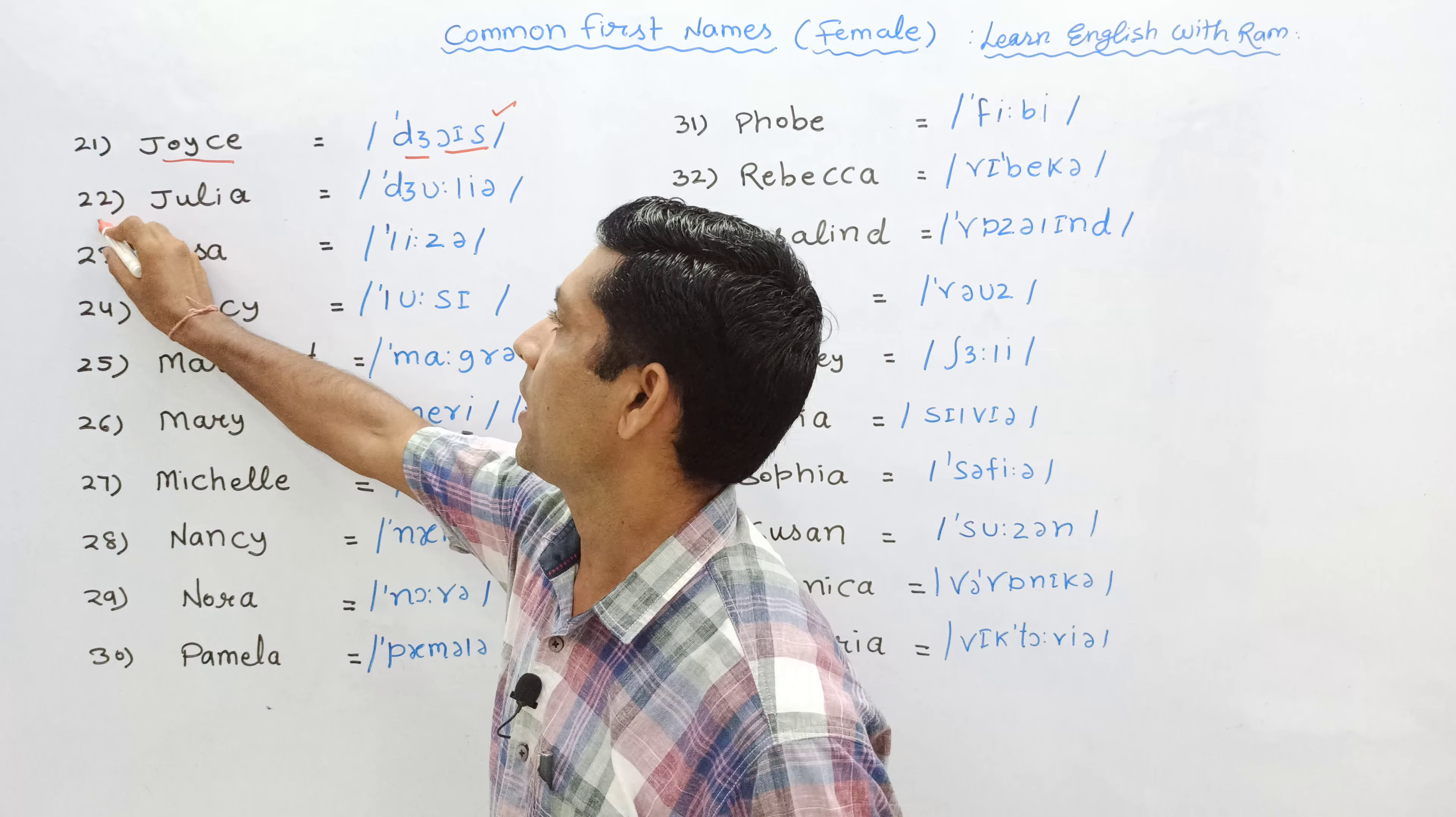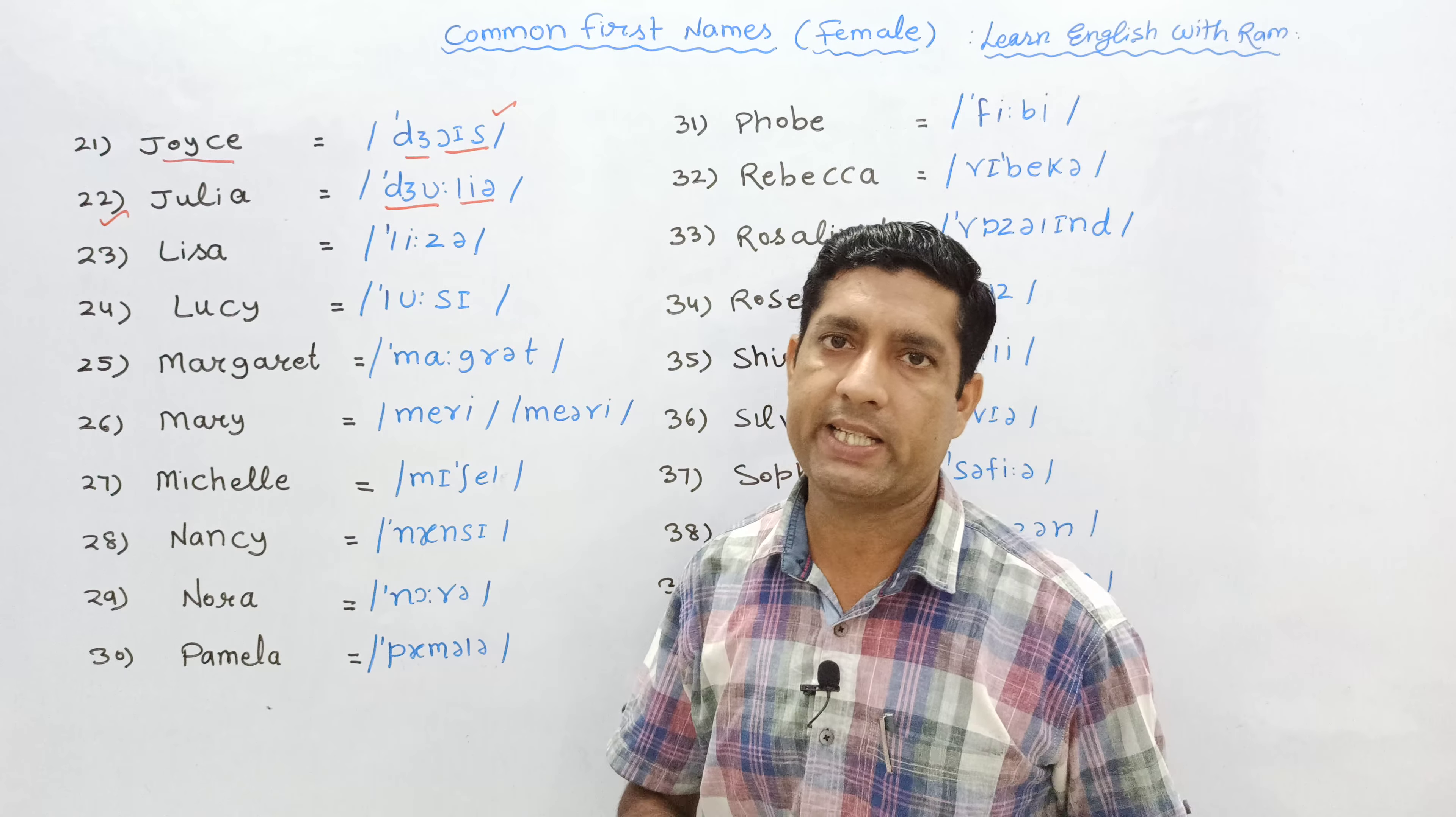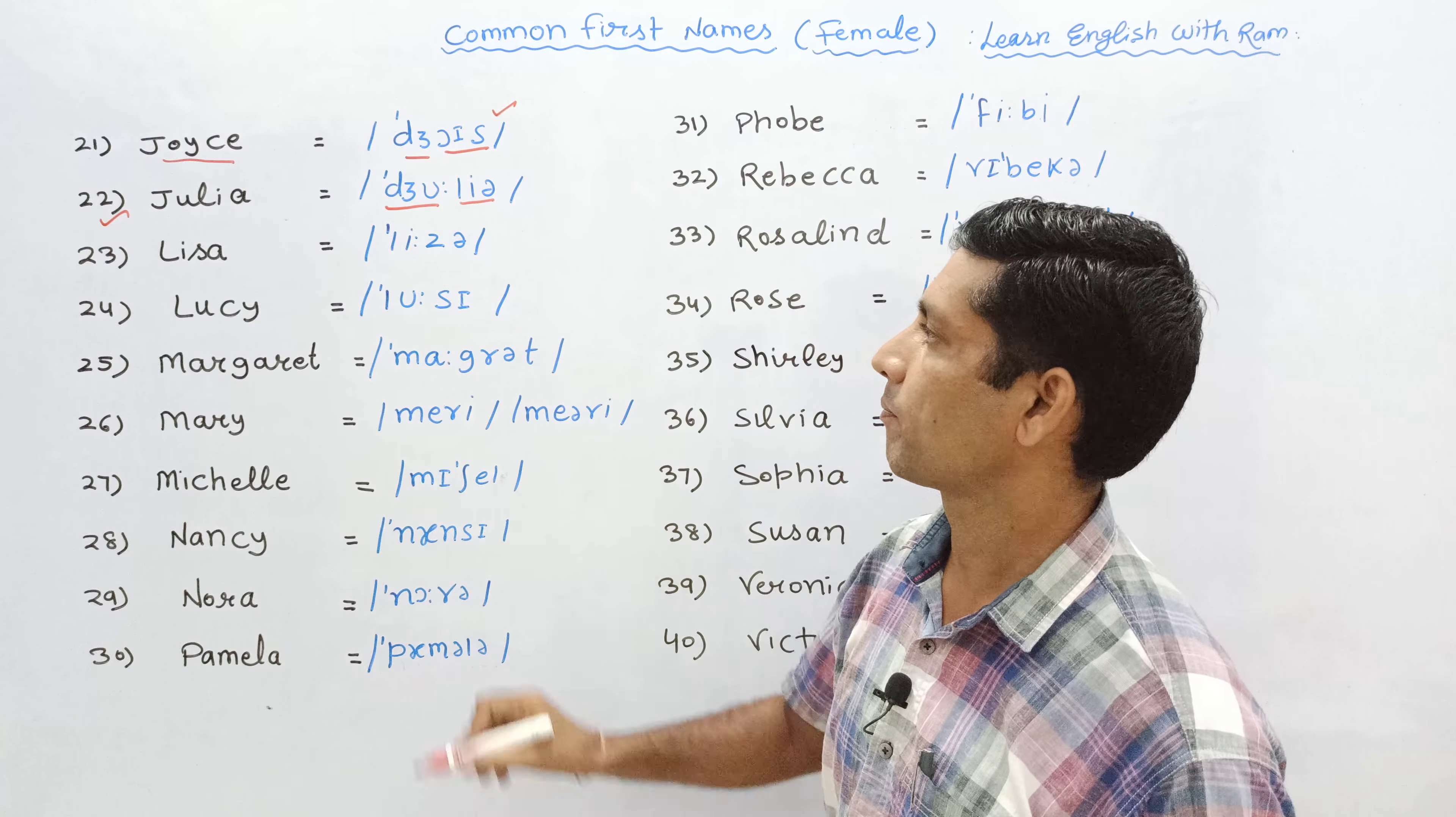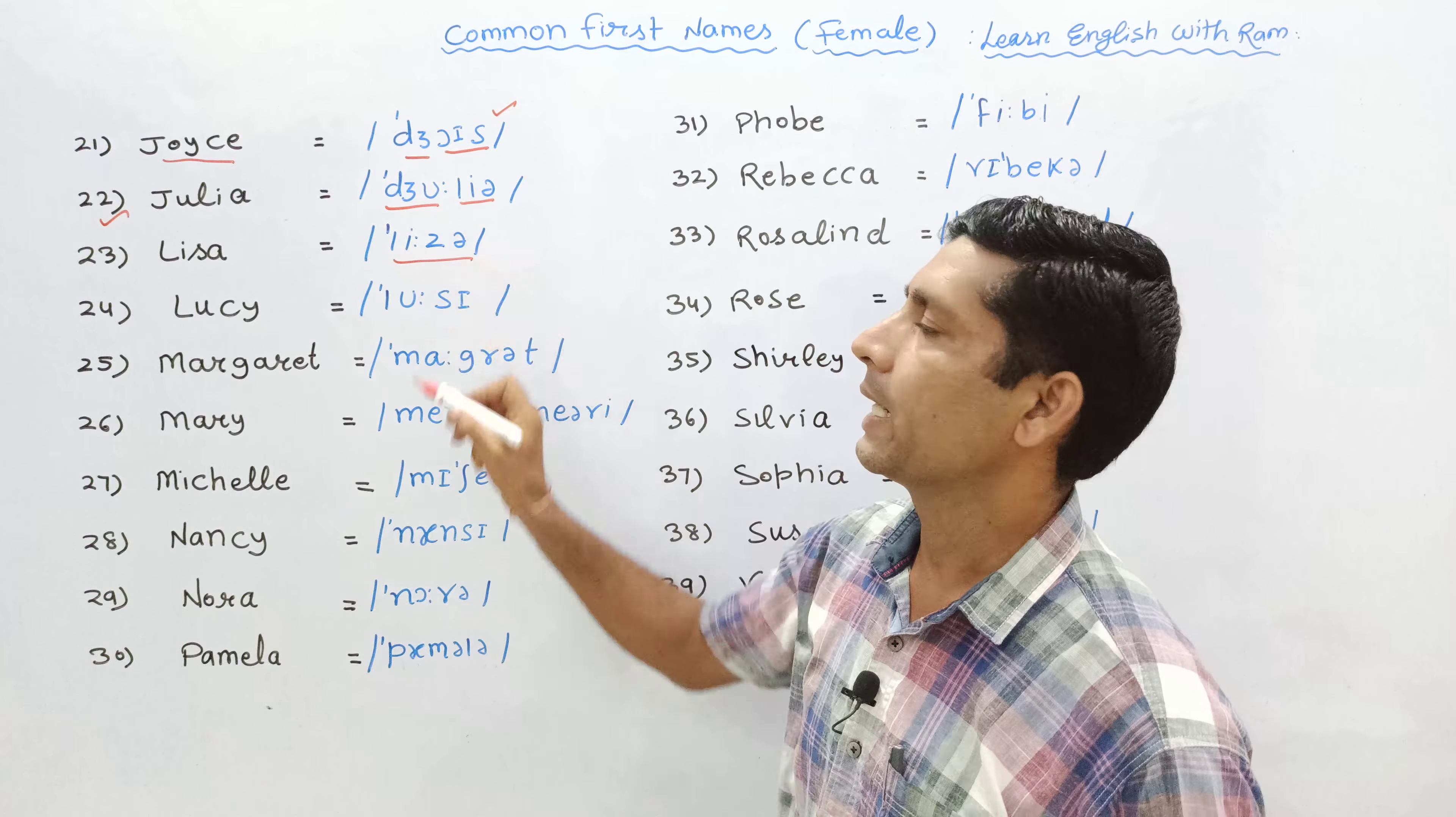Next is Julia. 23rd is Lisa or Lisa, both are correct.